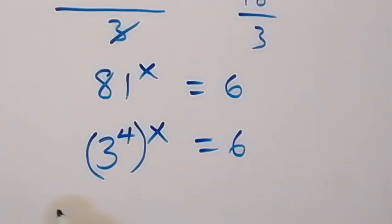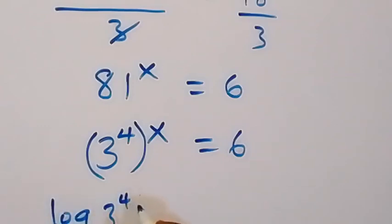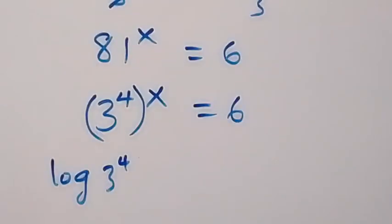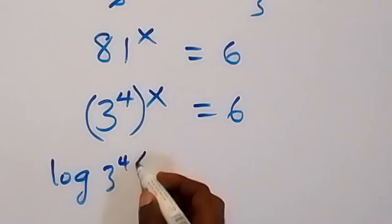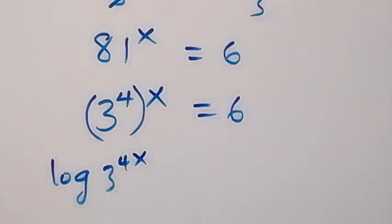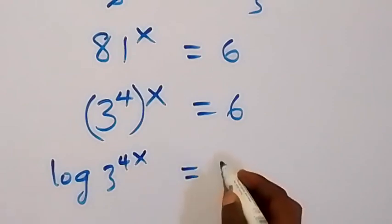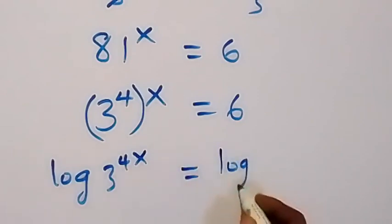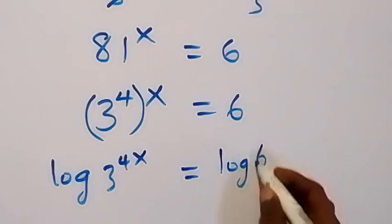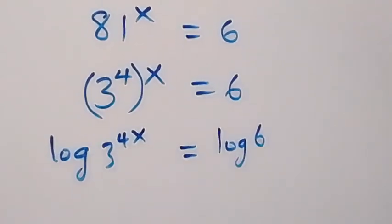In the next step we can take the log on both sides, so we have log of 3 raised to power 4x, which equals log 6 on this side. From the power rule of logarithms, the exponent multiplies the log.